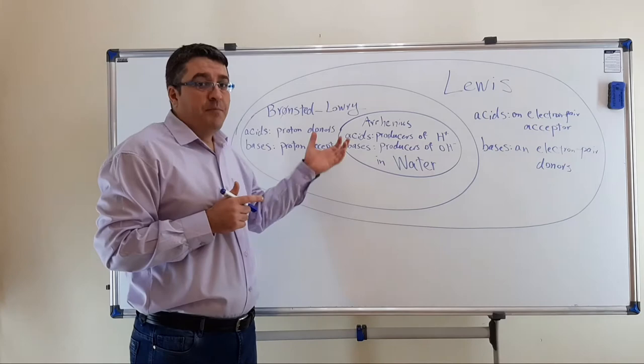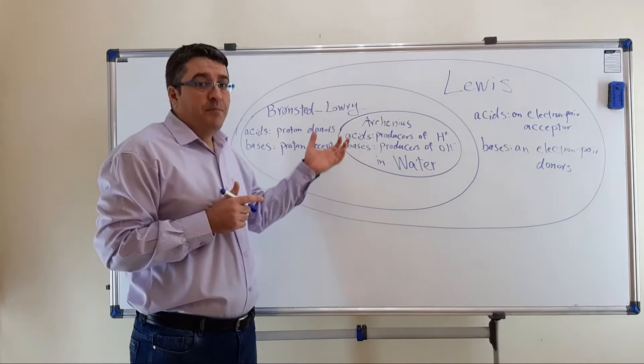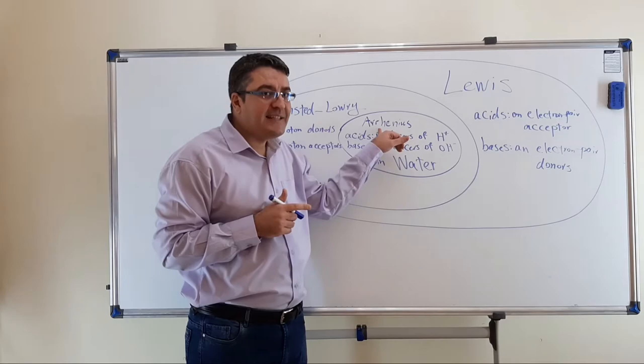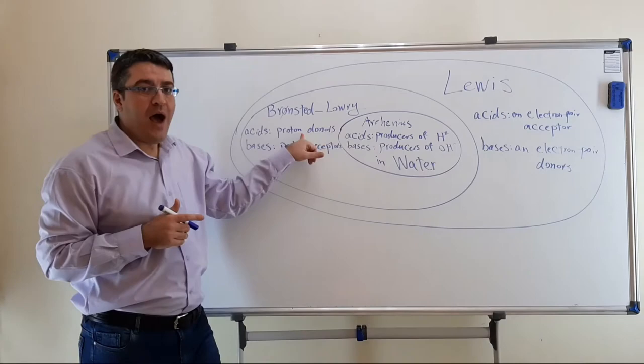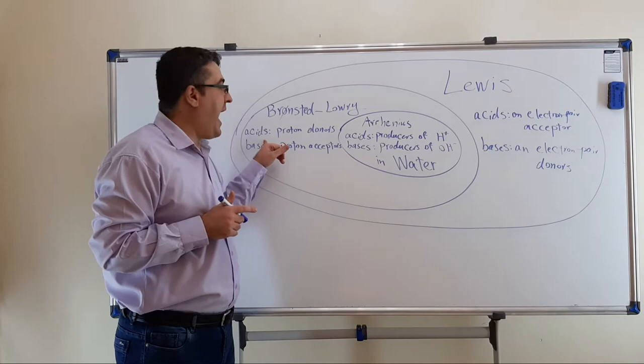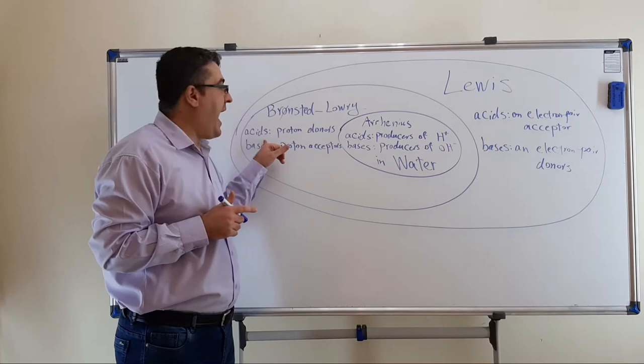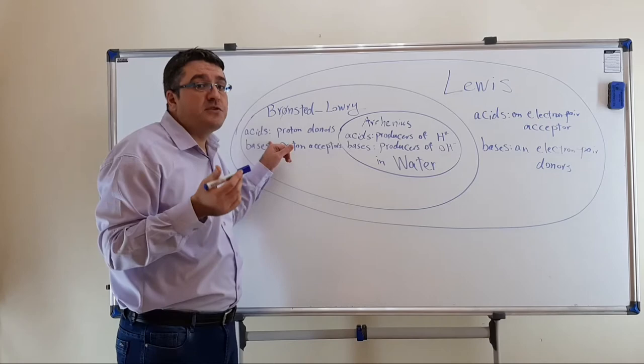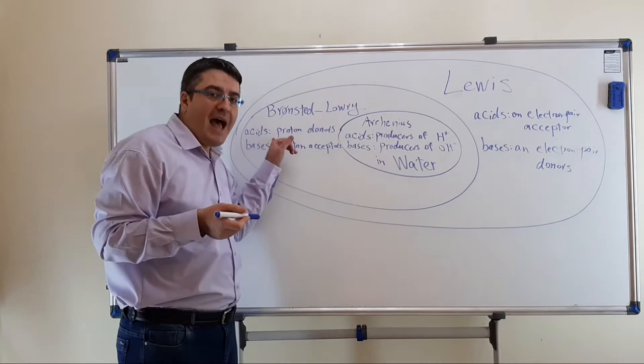We can justify these comparisons and relationships by considering that an Arrhenius acid is a producer of H+ or hydrogen ions in water. Therefore, an Arrhenius acid acts as a proton donor in water, so an Arrhenius acid is also a Brønsted acid. While on the other hand, a Brønsted acid is a proton donor — possibly in water, in many other solvents, in non-aqueous solutions, or even in gas phase. So generally, a Brønsted acid isn't necessarily an Arrhenius acid.